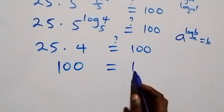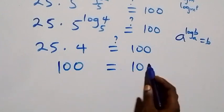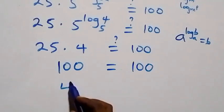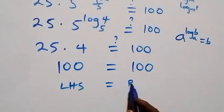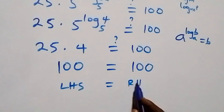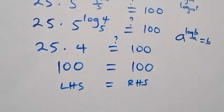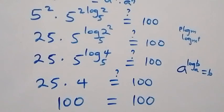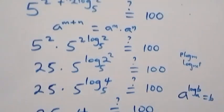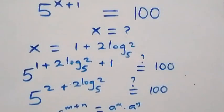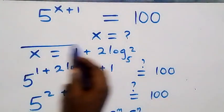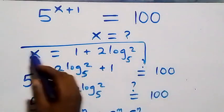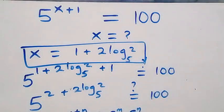25 times 4 gives us 100, which equals 100 on the right-hand side. The left-hand side now equals the right-hand side. So hence we can conclude that x equals 1 plus 2 log base 5 of 2 satisfies the given problem.